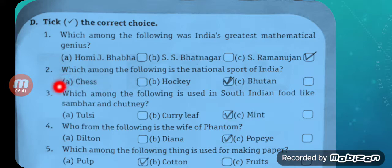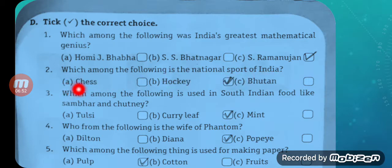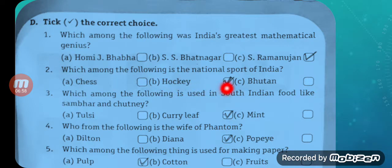Question number two: Which among the following is the national sport of India? Options: Chess, Hockey, or Badminton. Of course, Option B is correct — Hockey. So tick the correct answer as Hockey.